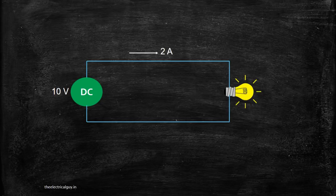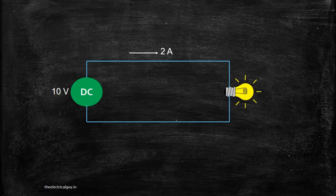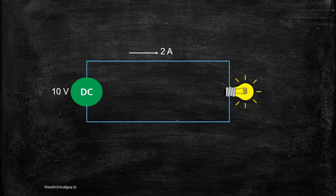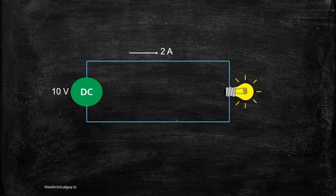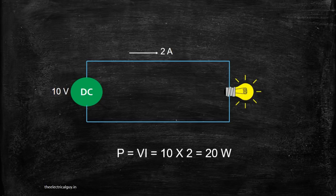Consider the example shown. Let's say we have a 10V DC source which is connected to a bulb and the current flowing through the circuit is 2A. From this, we can easily calculate the power drawn by the bulb by simply multiplying the voltage with current. As both voltage and current are constant, so it will give us the total power of 20W. And this is the power taken by the bulb at any instant.